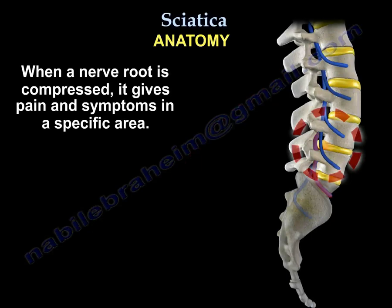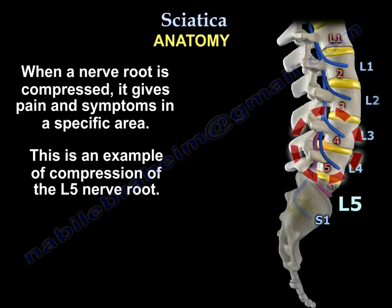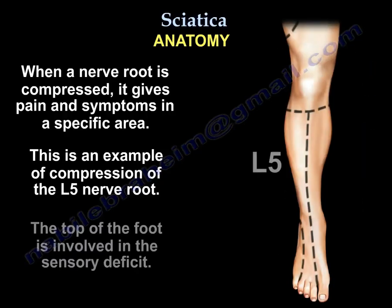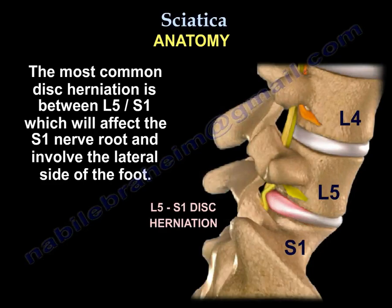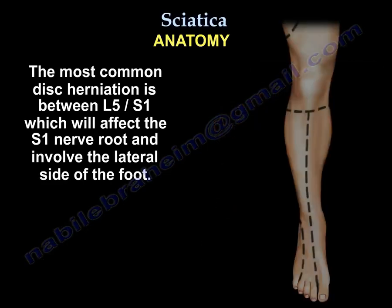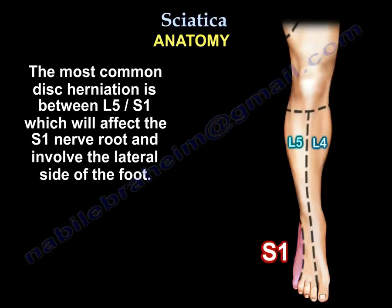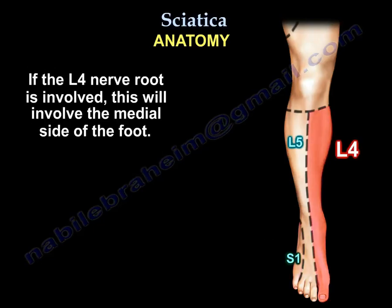When a nerve is compressed, it gives pain and symptoms in a specific area. For example, when the L5 nerve root is compressed, the top of the foot is involved in the sensory deficit. The most common disc herniation is between L5 and S1, which affects the S1 nerve root — the lateral side of the foot. If L4 is involved, you get the medial side of the foot.